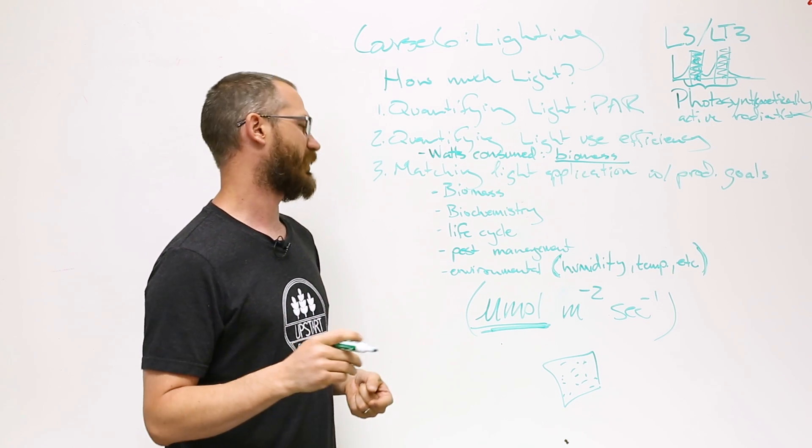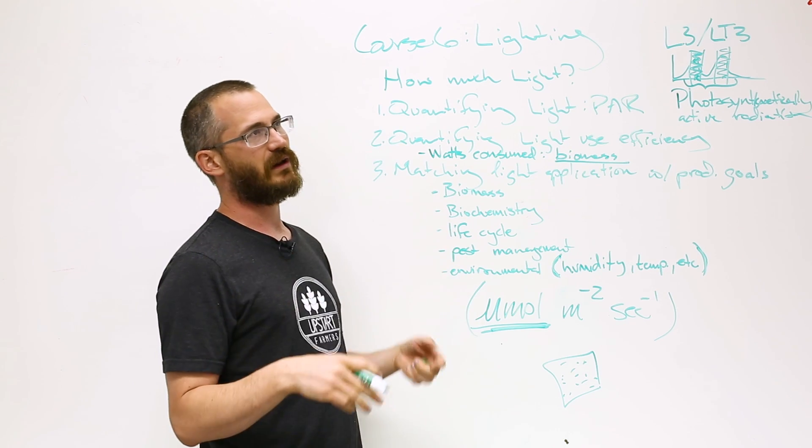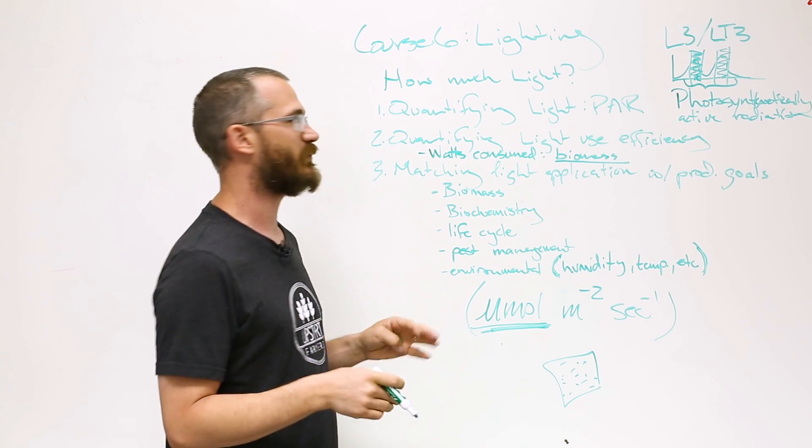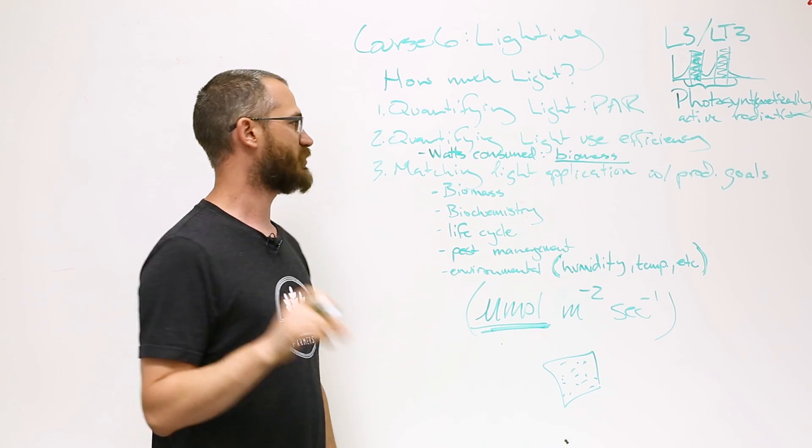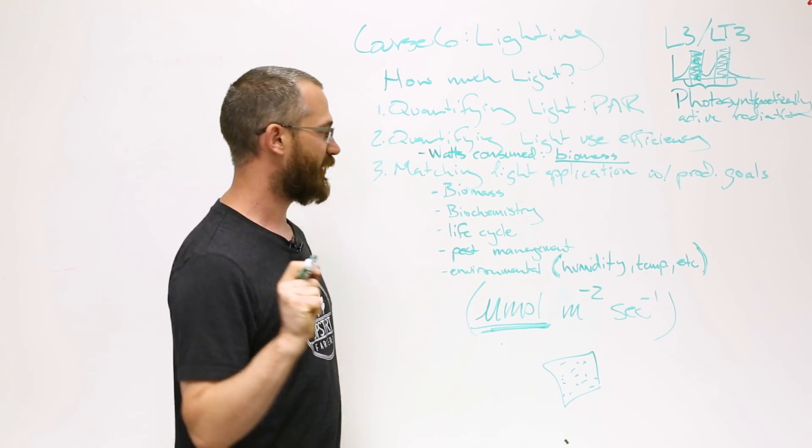Same thing with temperature, humidity, disease, pathogens, and all these other things. There are all sorts of other bottlenecks that can be your most limiting variable in a production environment. It's not always light, but oftentimes it is.